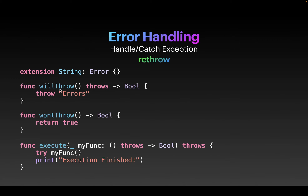The first one is going to throw something, and the second one just returns true. And let's assume we have a third function called execute, which essentially just takes a function and executes it. The signature looks like that. So it takes a function which is going to throw — might throw. And the entire execute function might throw, because you're going to try the function you passed in, which might throw.